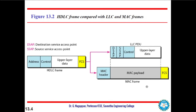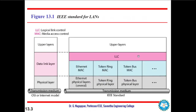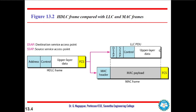The MAC (Media Access Control) frame has the MAC payload in the middle, with the MAC header and frame check sequence as header and trailer. This payload is taken by the LLC PDU, which is framed by the LLC header and payload. As shown in the data link layer diagram, the upper layer data is combined with control bits, SSAP (Source Service Access Point), and DSAP (Destination Service Access Point) to form the LLC frame.